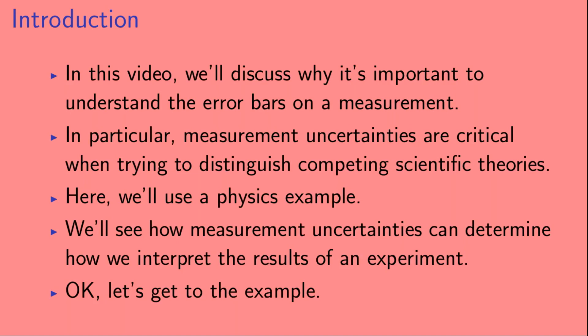In particular, measurement uncertainties are critical when trying to distinguish between competing scientific theories. Here, we'll use a physics example. We'll see how measurement uncertainties can determine how we interpret the results of an experiment. Okay, let's get to the example.